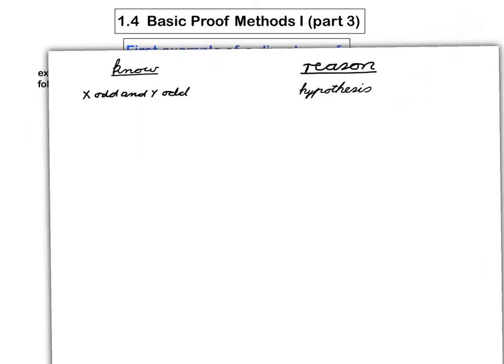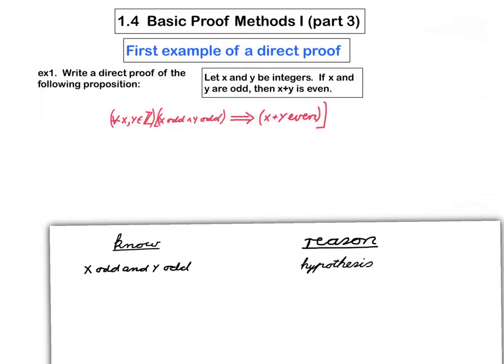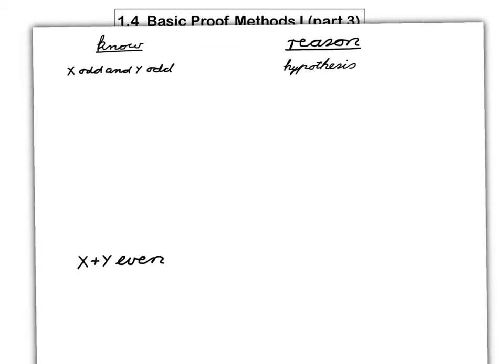The second thing that we add to the table comes from the conclusion here. So we're going to indicate that. And that's going to be the very last thing that shows up in the table. But I can't fill this one in yet, because I don't really know why I'm going to be able to assert that x plus y is even.